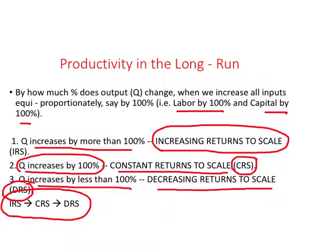The level of output at which a firm experiences increasing, constant, or decreasing returns to scale depends on the nature of the industry — it is ultimately an empirical question.